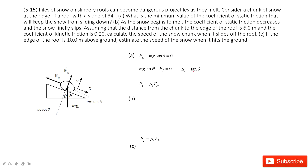The snow begins to melt and then starts to move down. When it moves down, we consider the kinetic friction coefficient μk. We apply the same approach — considering the y-component and x-component — to write Newton's second law and find the acceleration. We know the initial velocity and the displacement from the snow to the boundary.